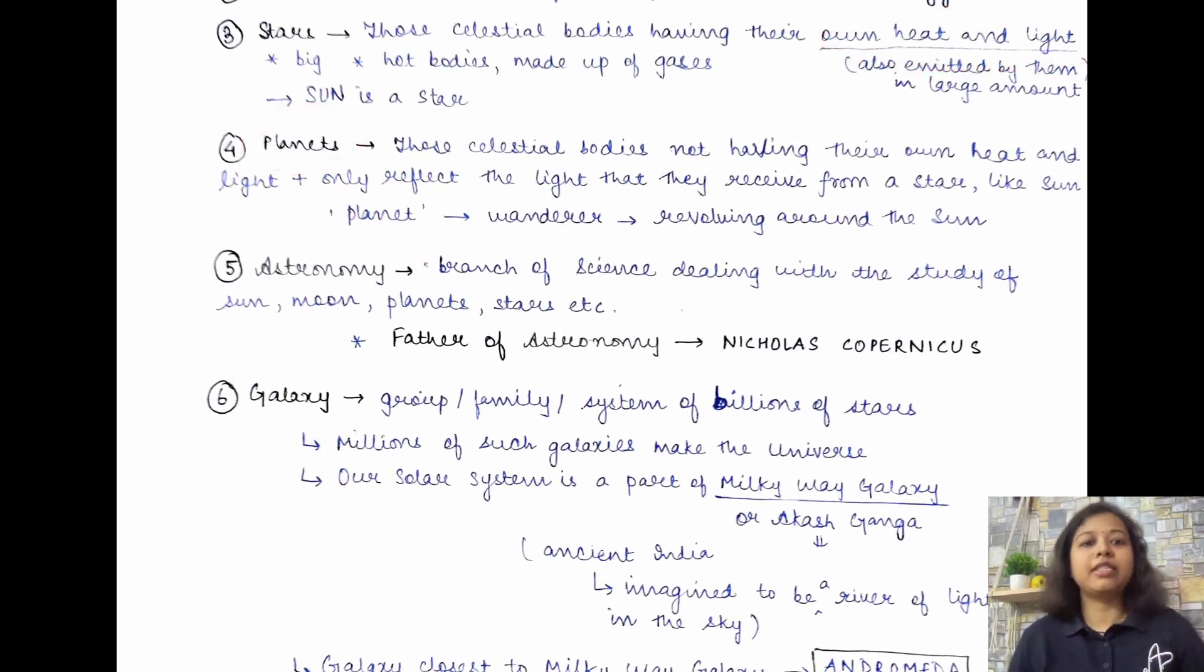Moving ahead with the planets, then, jo planet hum samajhte hain jaise earth hum ne dekh liya. Thik hai, that's a planet. To ye planet kya hota hai? These, again, these are celestial bodies. Everything is celestial here because it is present in the universe. But they do not have, they are not having their own heat and light. This is the key feature that differentiates stars from planets. Stars have their own heat and light and they emit them. Planets do not have their own heat and light.